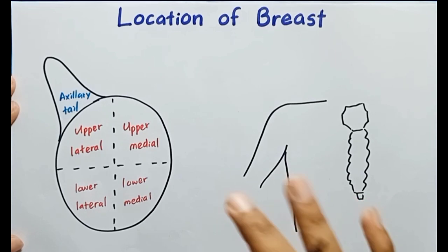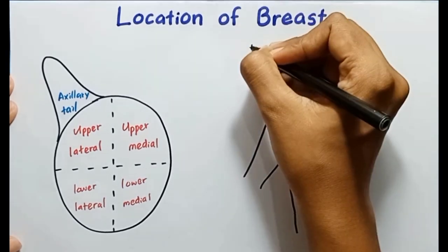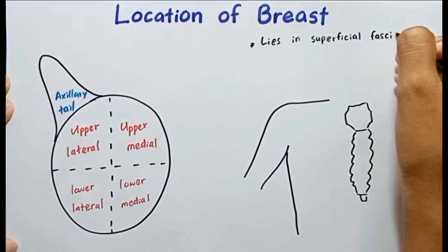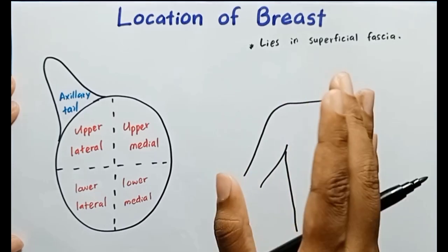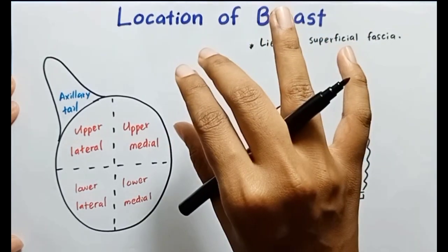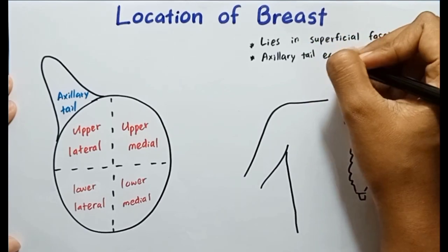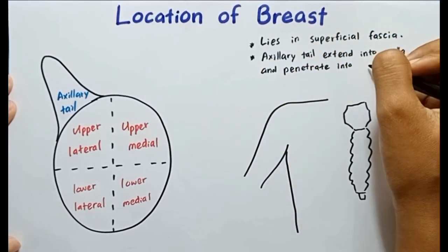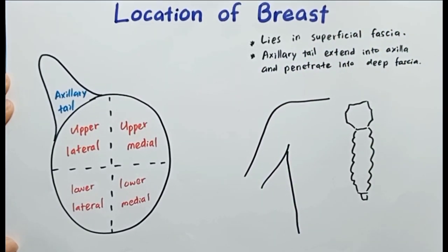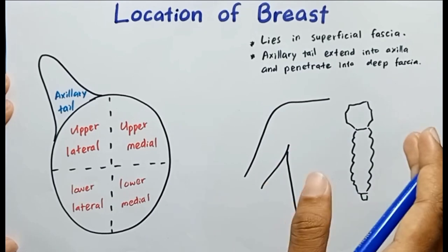The breast lies in superficial fascia, and its axillary tail extends into the axilla and penetrates deep fascia. Therefore, the breast rests on deep fascia.